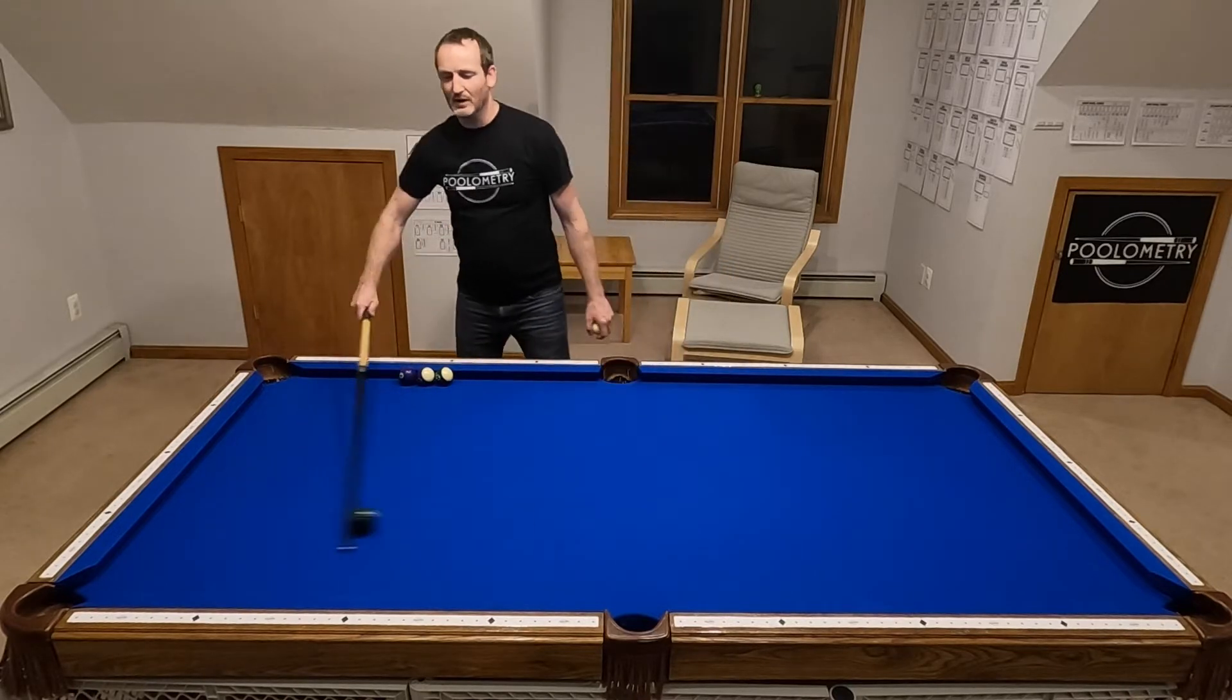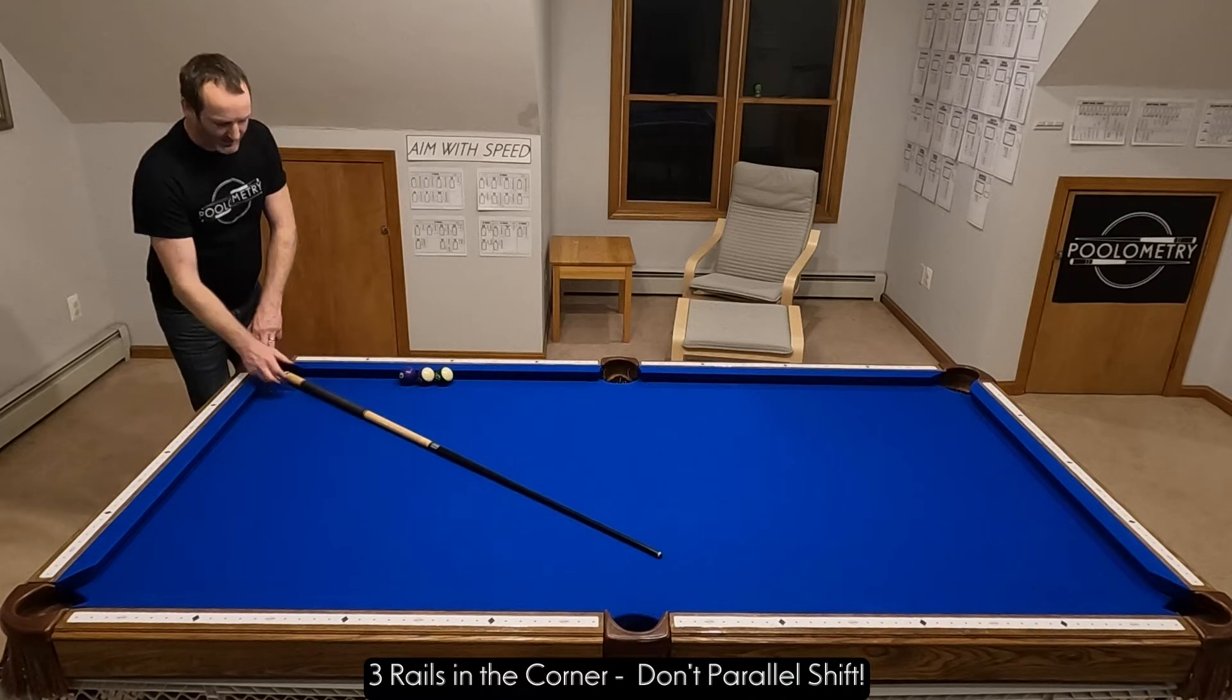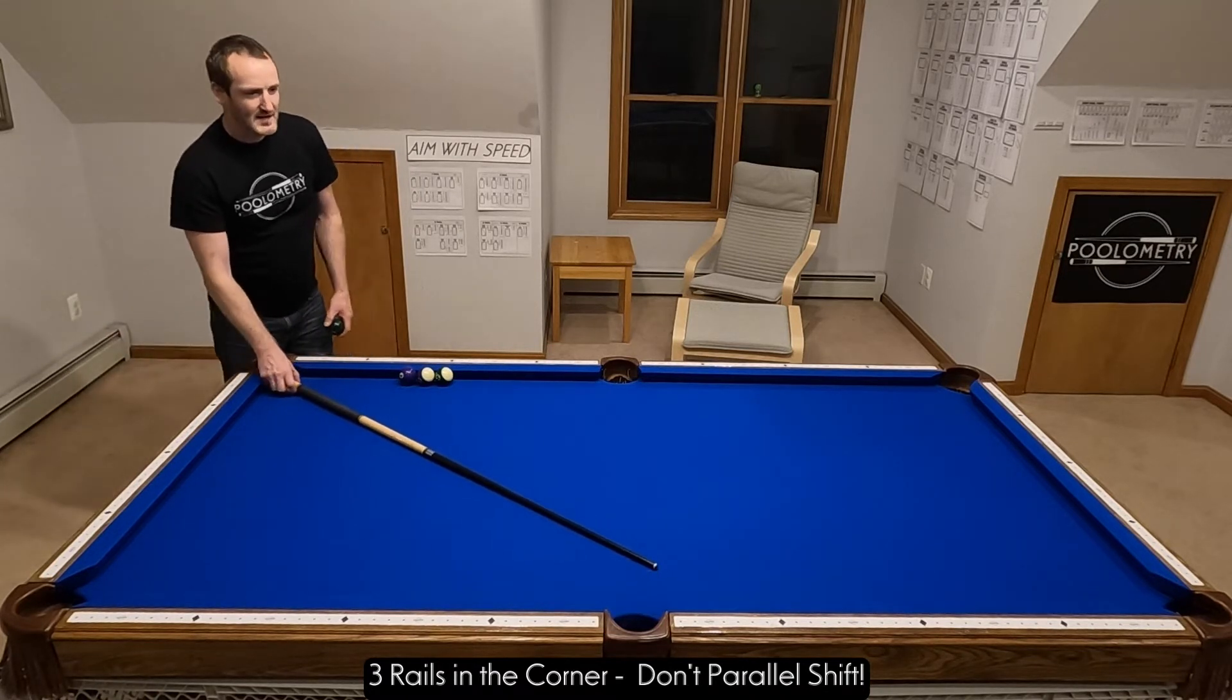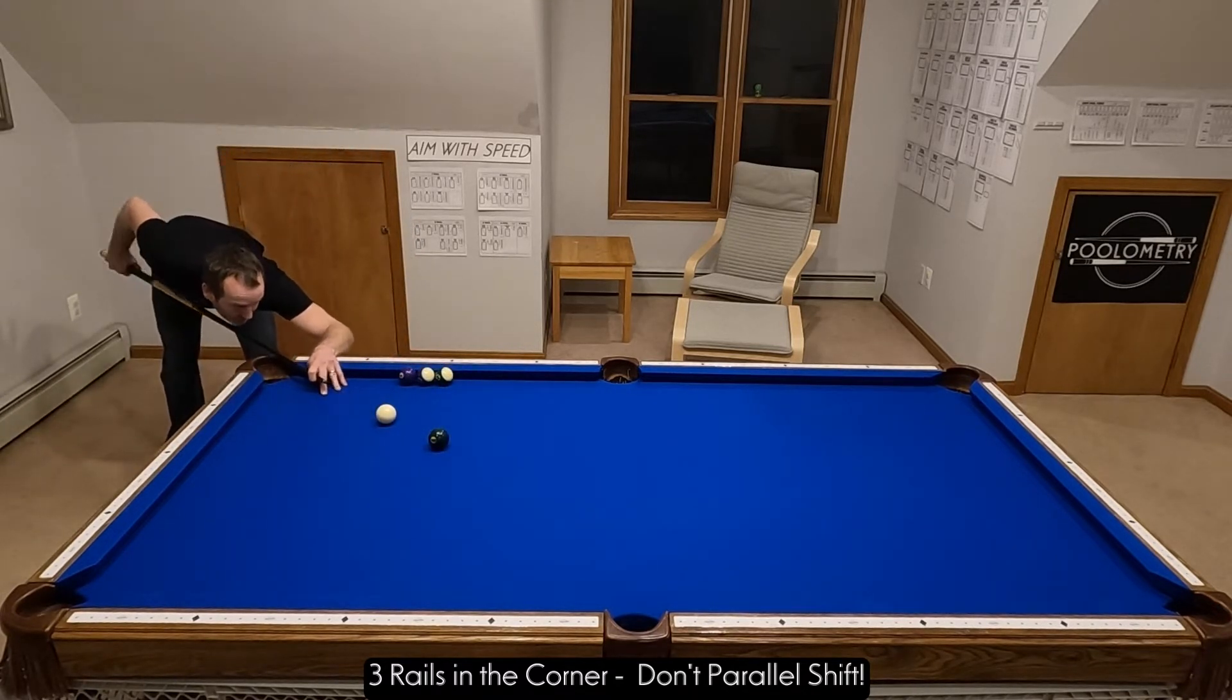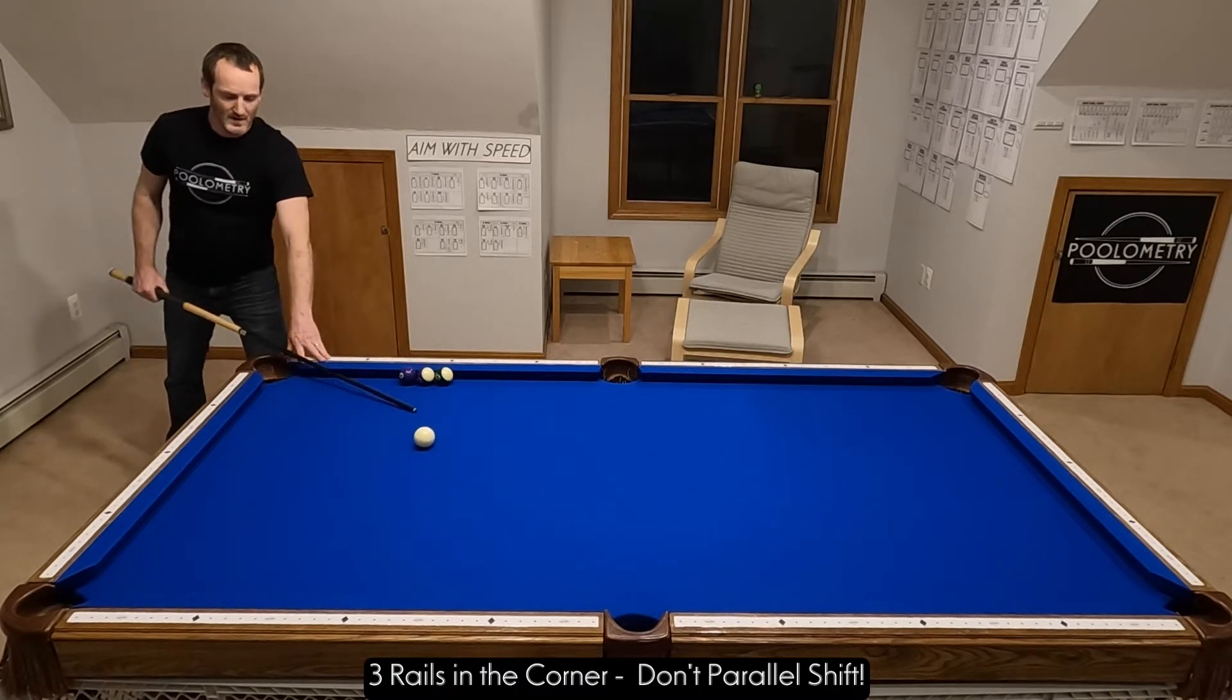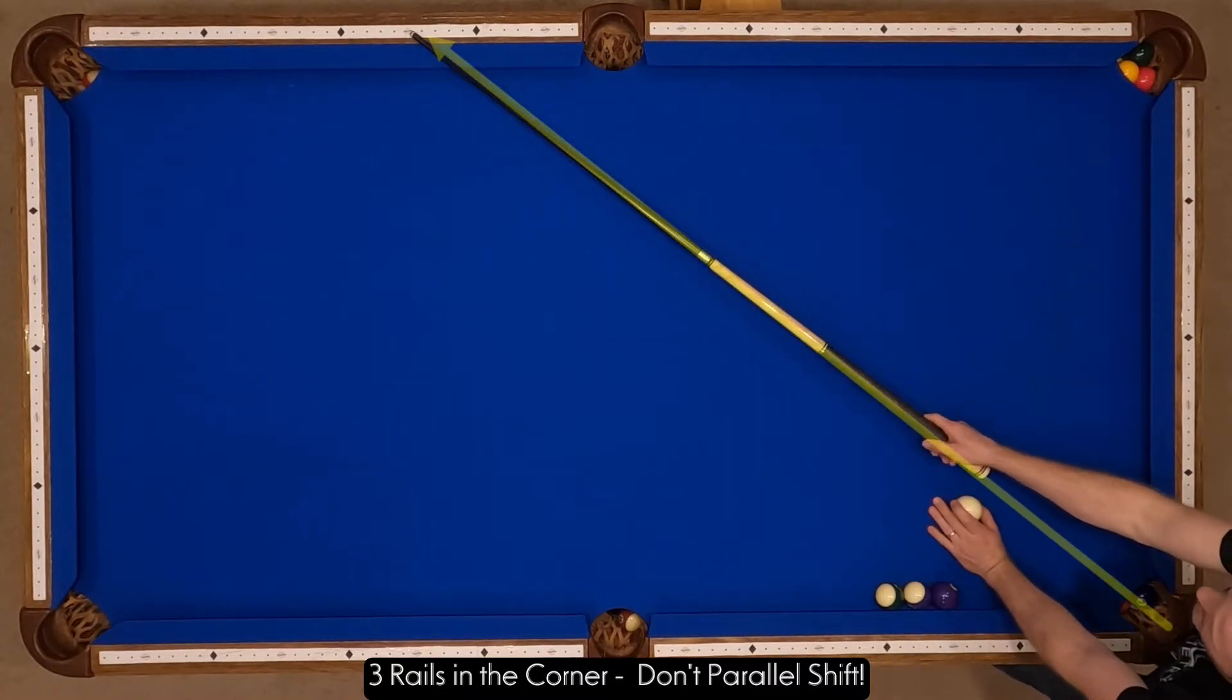Second shot that this is typically applied to is your three rail bank shot. A lot of people call this the plus five system or the plus five and a half, depending on your table, even six. In my table, this goes through about 5.5. We'll see if I can get it to go here.